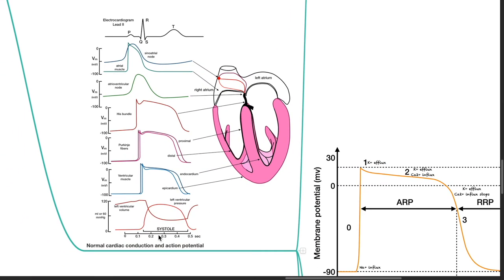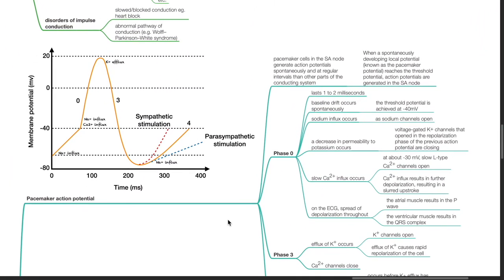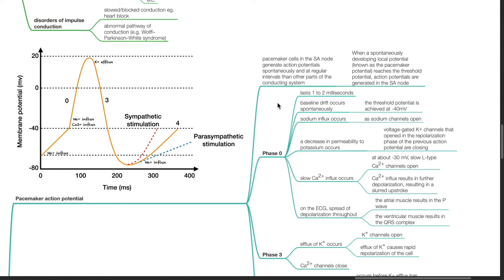Normal cardiac conduction and action potential. Pacemaker action potential. Pacemaker cells in the SA node generate action potentials spontaneously and at regular intervals more than other parts of the conducting system. When a spontaneously developing local potential known as the pacemaker potential reaches the threshold potential, action potentials are generated in the SA node. There are three phases: phase 0, phase 3, and phase 4.